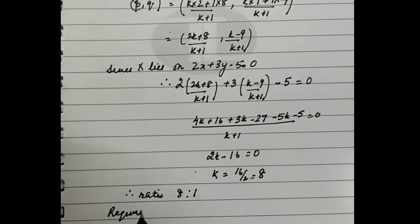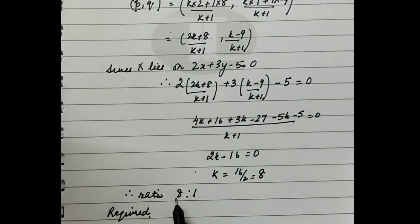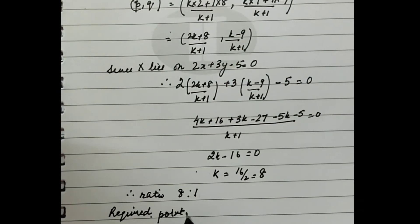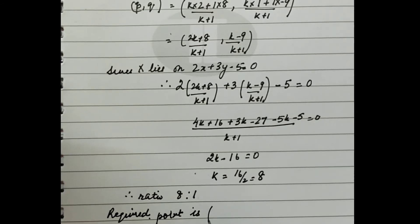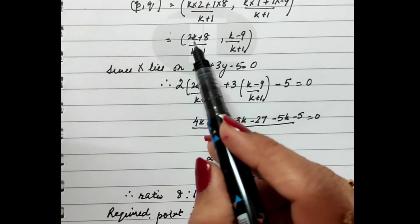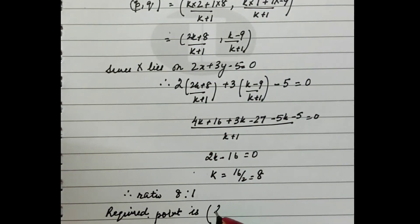we substitute k = 8 into the point formula. For the x-coordinate: 2×8 = 16, 16 + 8 = 24, so 24/9.